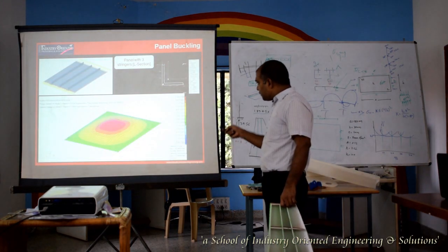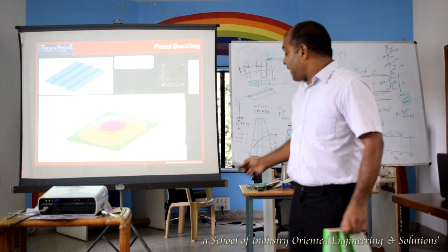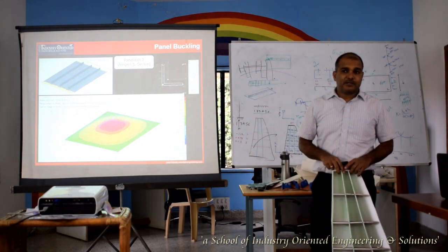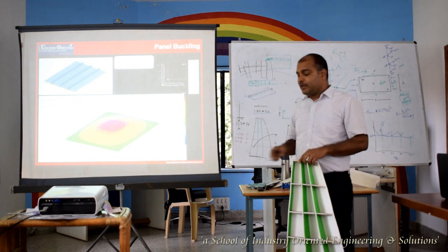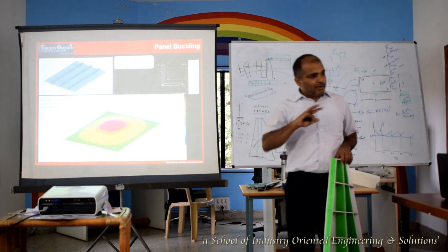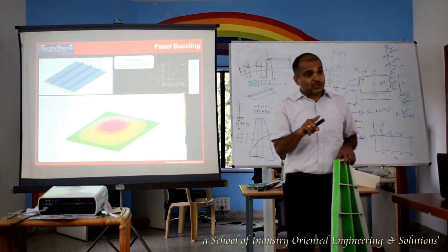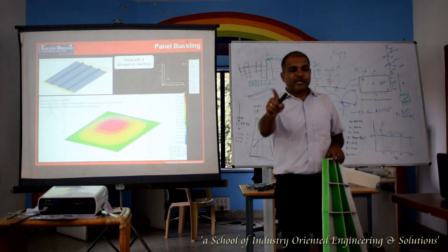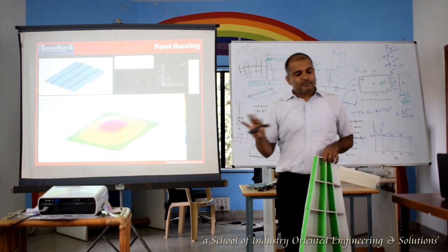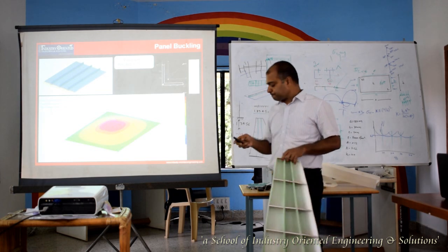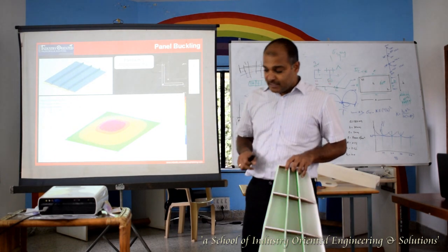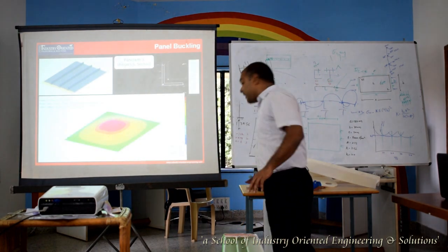Even though in the previous one we used the L cross-section stringer, the factor was coming way high — 30.97. But the mode shape was not acceptable. As a good engineer, you should always see how your structure is deforming. Even in static analysis, first see the deformation, then get into the stresses. So here the mode was the global mode, which was not acceptable to us. It means we wanted to use the stringer as a panel breaker.